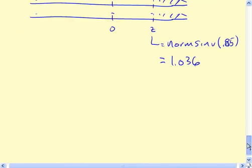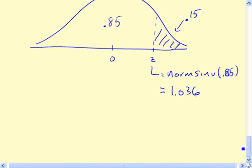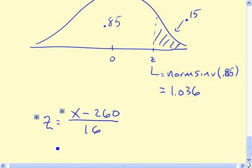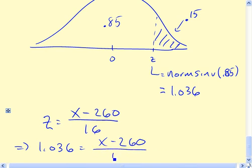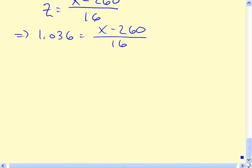So now the last step is to kind of unstandardize. So remember, we've got z equals, it's always x minus the mean, so 260, divided by the standard deviation, 16. So now we know the z value. We want to know what the corresponding x value is. So if we plug in z here, we've got 1.036 equals x minus 260, divided by 16. A little more space here. So x has got to be equal to what?